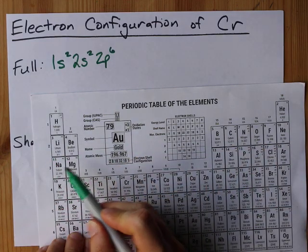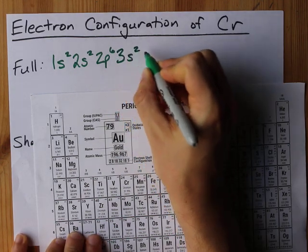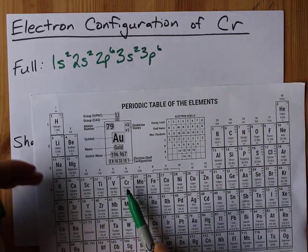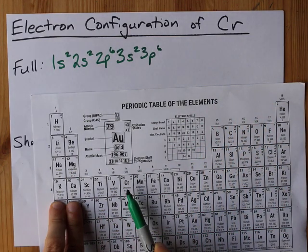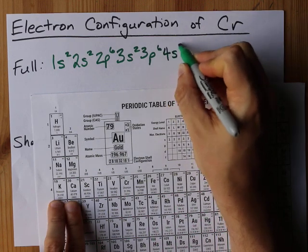The third row here has 3s2 and 3p6 in that order. And we have to get to here. So we go down to our fourth row. This is 4s and we're going to fill both of those electrons. 4s2.